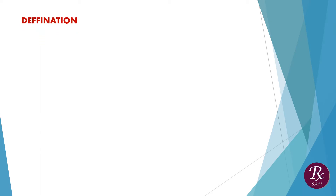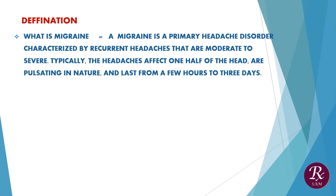Definition — what is migraine? A migraine is a primary headache disorder characterized by recurrent headaches that are moderate to severe. Typically, the headaches affect one half of the head, are pulsing in nature, and last from a few hours to three days.